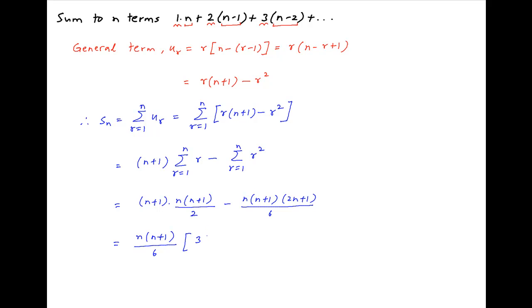Plugging in these values and taking n times n plus 1 upon 6 common in brackets, we get 3 times n plus 1 minus 2n plus 1.